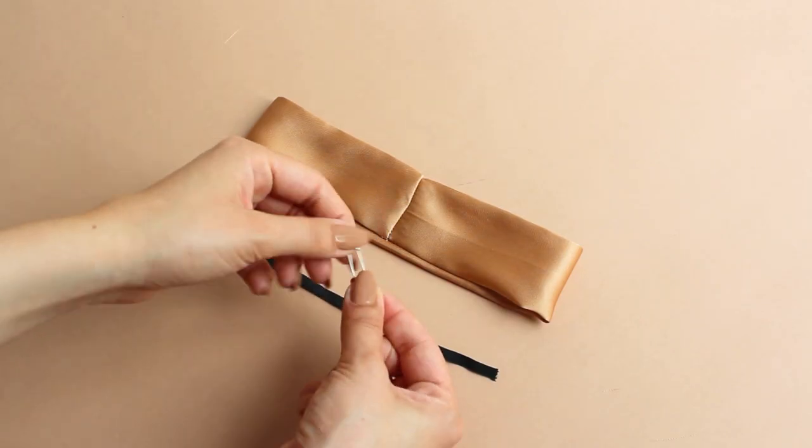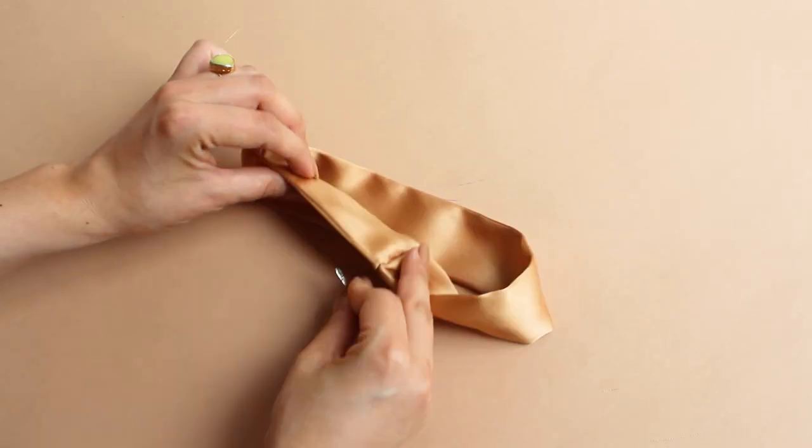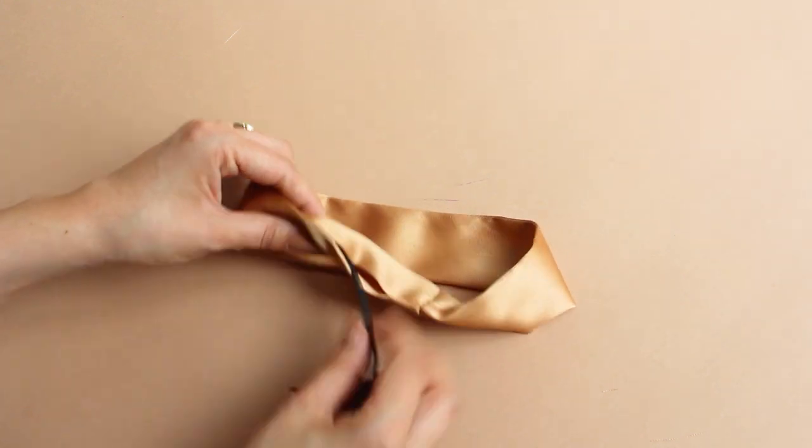Use a safety pin to insert the elastic through the gap and keep the other end in your hand. Then make a knot.